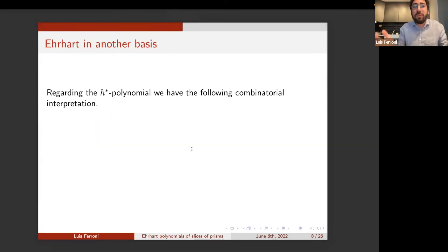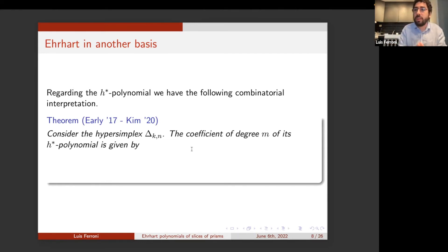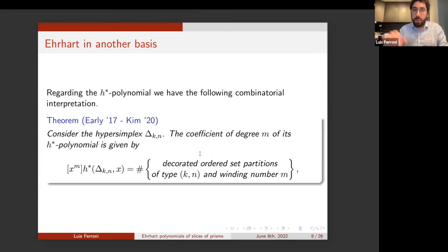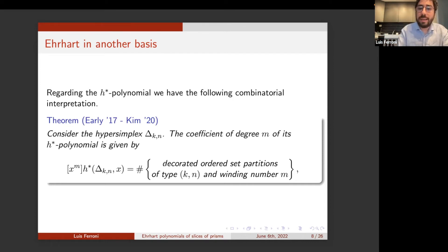The next natural question would be: what about the H* polynomial? In 2017, Nick Early conjectured that certain objects, when enumerated, tell you what the coefficients of the H* polynomial of the hypersimplex are. The coefficient of degree m of the H* polynomial of the hypersimplex is the number of decorated ordered set partitions of type (k,n) and winding number m. So we can generalize both the previous result and this result for a much larger class of polytopes.